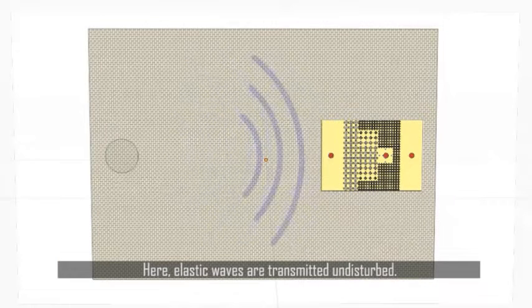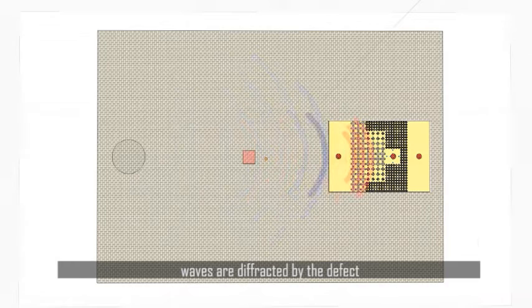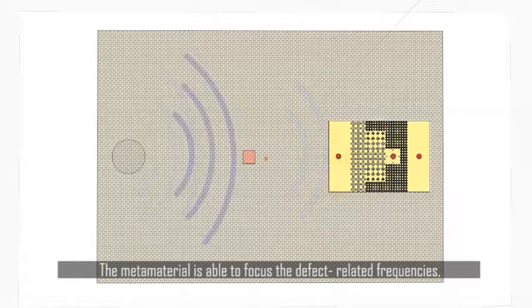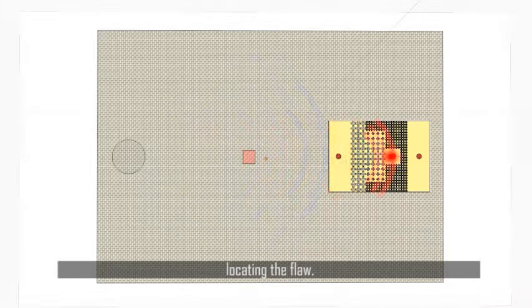Here elastic waves are transmitted undisturbed. Here instead, waves are diffracted by the defect, generating a peculiar frequency signature. The metamaterial is able to focus the defect related frequencies, locating the flaw.